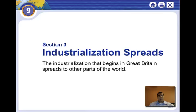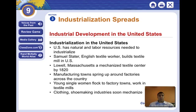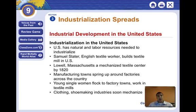Industrialization produced a lot of wealth, and other countries wanted this. One of the first countries to become industrialized after England was the United States, and it comes through a man named Samuel Slater. Textile workers couldn't leave England because of the secrets, but Samuel Slater disguised himself as a farm worker, came to America, and started the textile industry in Lowell, Massachusetts.